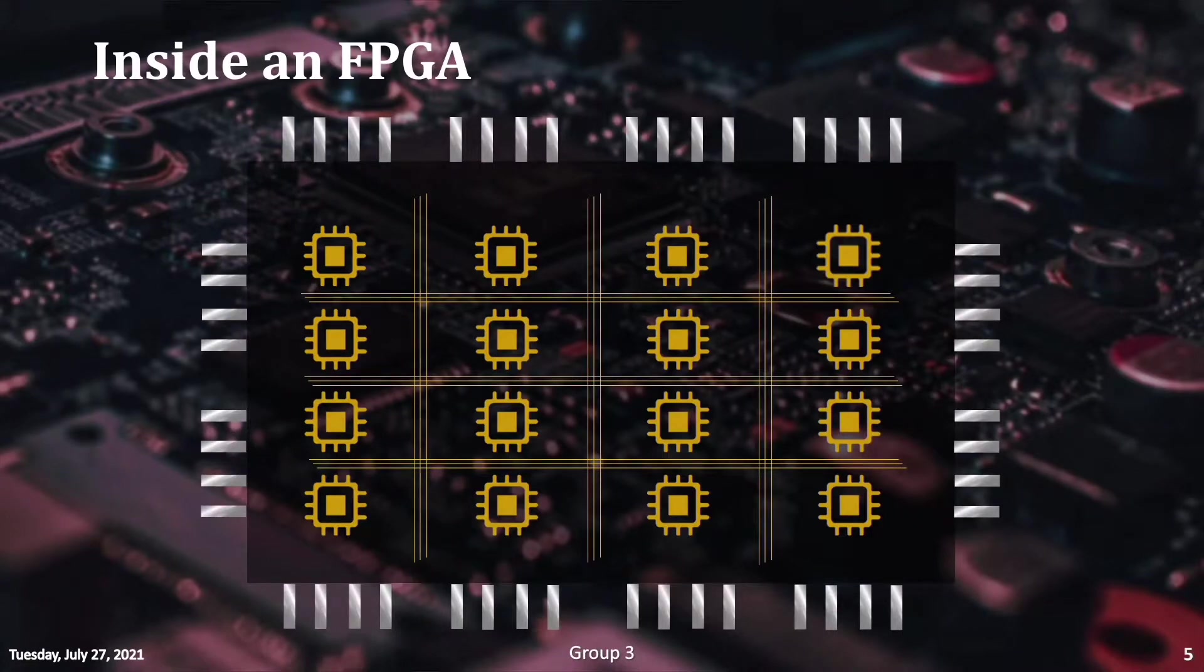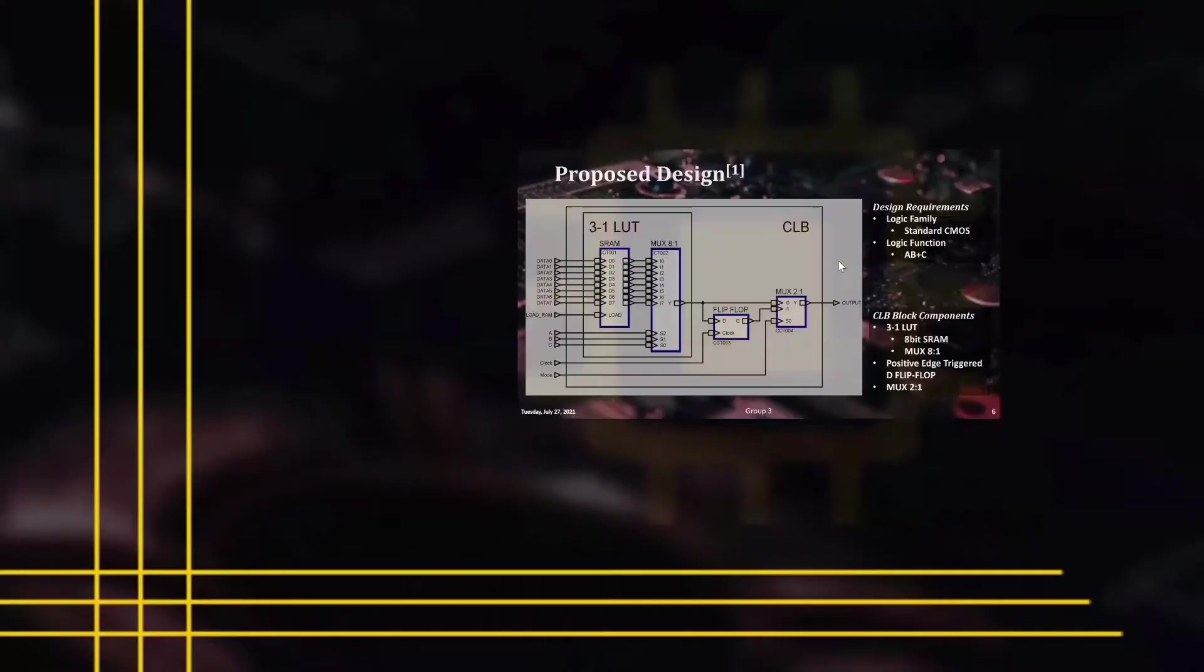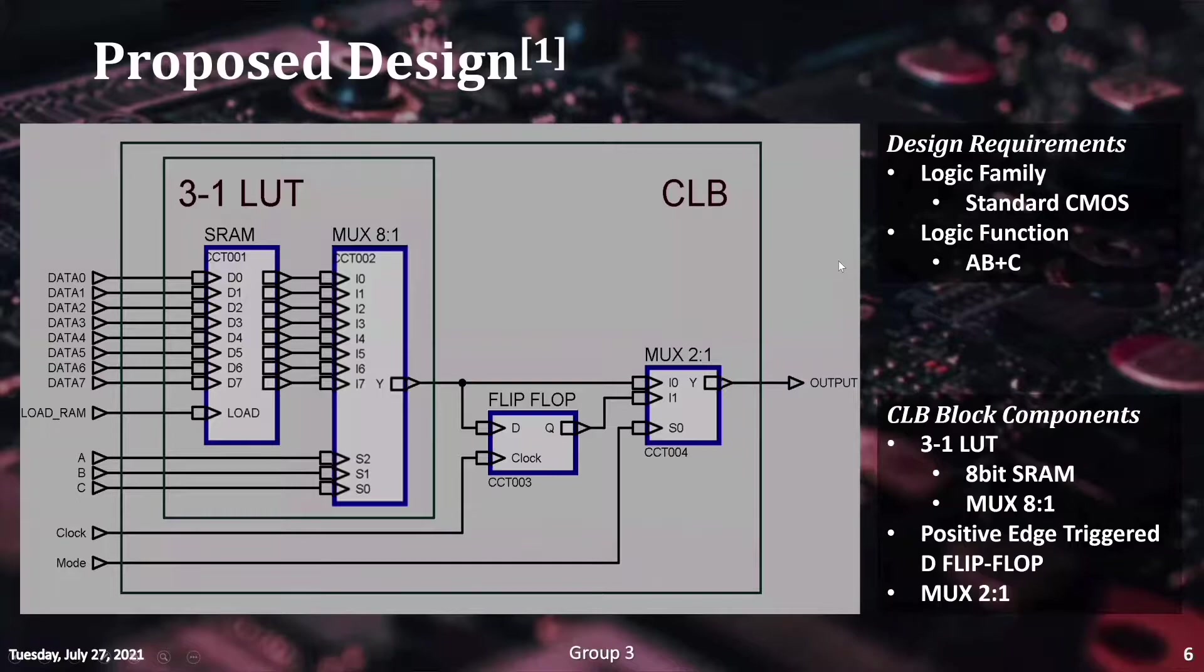These are the fundamental units of an FPGA chip that can be programmed externally. Our group has been tasked with the implementation of a CLB unit with 3 inputs and 1 output, and the device has to be constructed using the CMOS logic family.